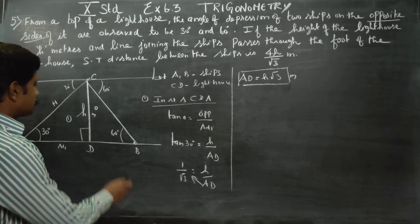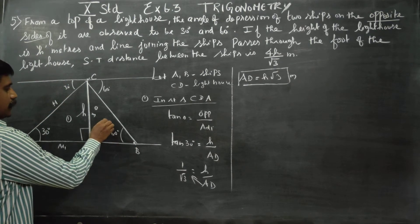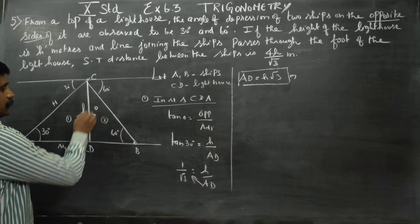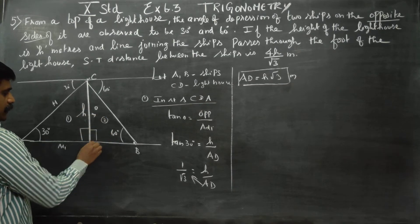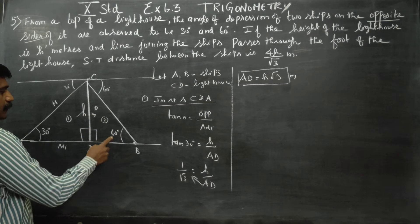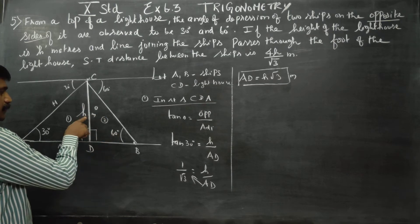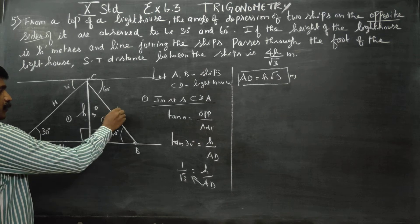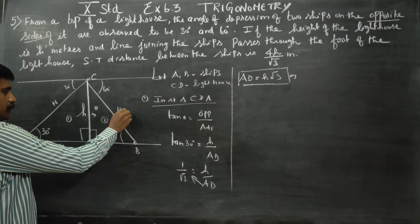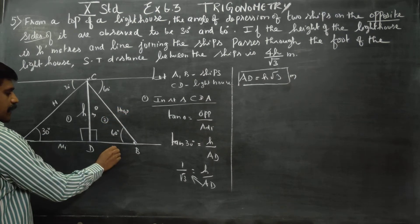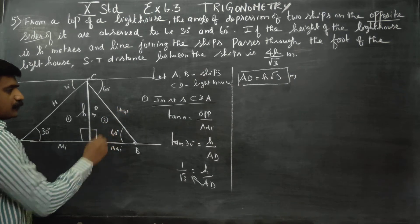Now for the second part: in triangle number 2, this is a right angle triangle. The angle is 60 degrees — this side is the opposite, this is the hypotenuse, and this is the adjacent part.